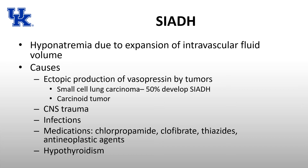SIADH — the syndrome of inappropriate antidiuretic hormone secretion — is pretty much exactly the opposite of diabetes insipidus. Diabetes insipidus is when you're not secreting any antidiuretic hormone, so you're unable to reabsorb water, resulting in intravascular volume depletion, increased plasma osmolality, and hypernatremia. When you have too much vasopressin, you have the opposite: hyponatremia due to reabsorption of water, expansion of intravascular fluid volume, and fluid overload.